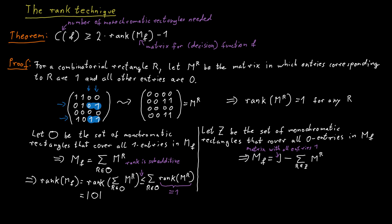We can do a similar thing for the second way of expressing MF. So the rank of MF is also equal to the rank of this all-ones matrix minus the sum of R in Z over MR. And we do the same thing as before and we determine that this is less or equal to one plus the size of Z.